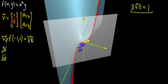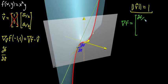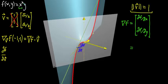You take the gradient of f — just the vector-valued gradient — and take the dot product with your vector. The gradient of f is a vector of partial derivatives: the partial derivative of f with respect to x, and the partial derivative with respect to y. The partial with respect to x: y is a constant, so it's 2xy. The partial with respect to y: x is a constant, so the derivative is just x².